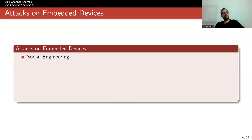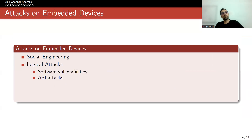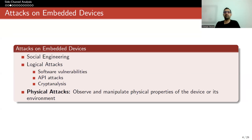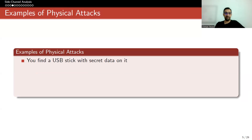Attacks on embedded devices include social engineering, logical attacks like software vulnerabilities and API attacks, and cryptanalysis. But physical attacks — where we are going to talk about side channel analysis — observe and manipulate the physical properties of the device or its environment. We will see some examples about it.